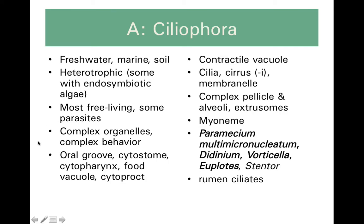They are pretty complex for single-celled organisms. They have complex behaviors and complex organelles that make them seem like tiny little animals, especially because they have things like an oral groove and a cytostome or cell mouth, and a cytopharynx or cell throat, and a cytoproct or cell anus.